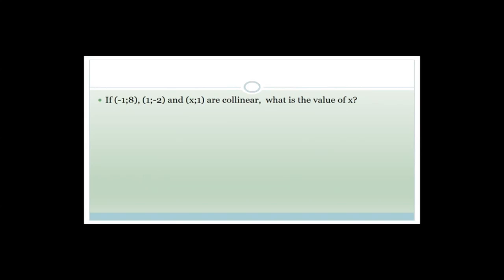A more exam-type question: given three collinear points A(minus 1, 8), B(1, minus 2), and C(x, 1), find x. We say M of AB must equal M of BC. Calling A as x1, y1 and B as x2, y2: M of AB equals (minus 2 minus 8) over (1 minus minus 1) equals minus 10 over 2, which equals minus 5. So the gradient is minus 5, and that must equal the gradient of BC.